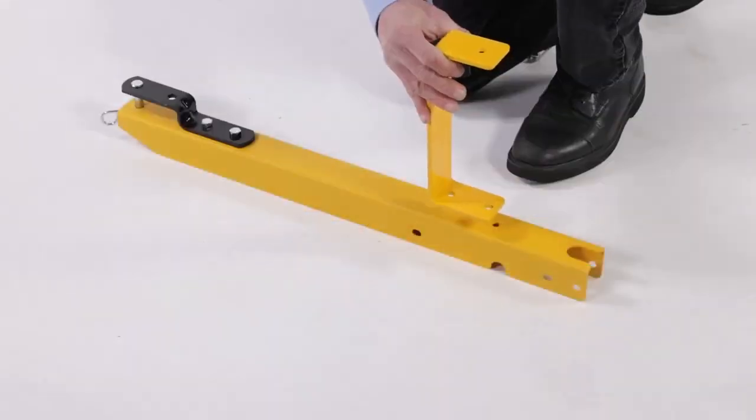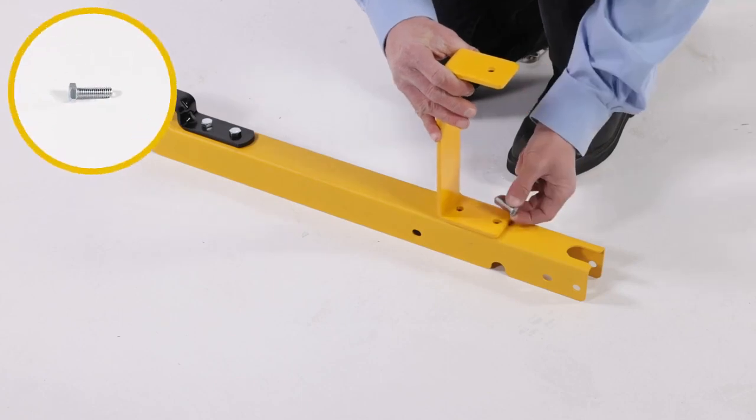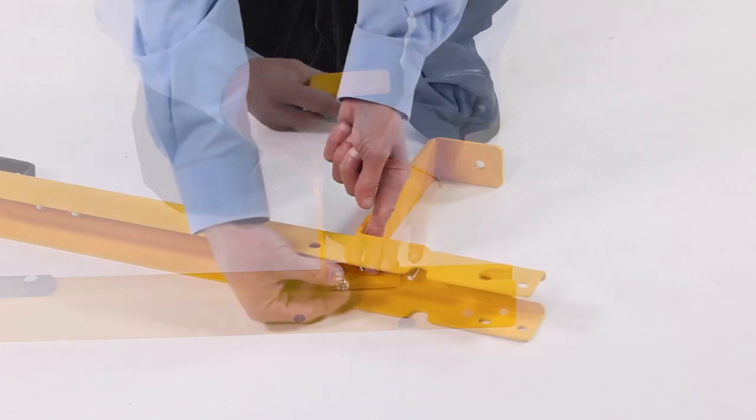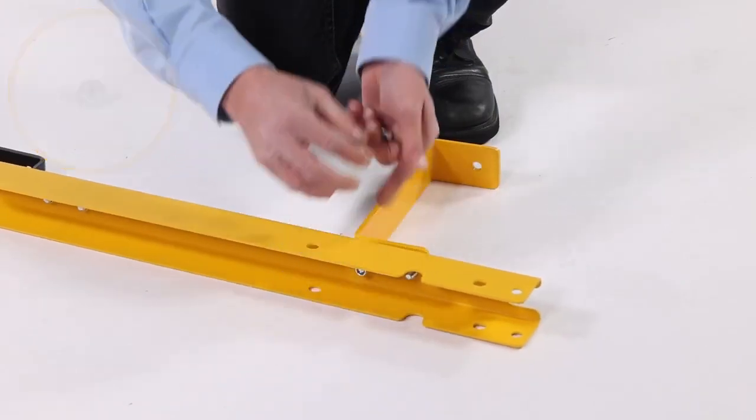Now align the stand bracket, Part 11, and fully secure it with 2 5/16 by 1 inch bolts, Part F, and 2 5/16 inch Nylok hex nuts, Part J.